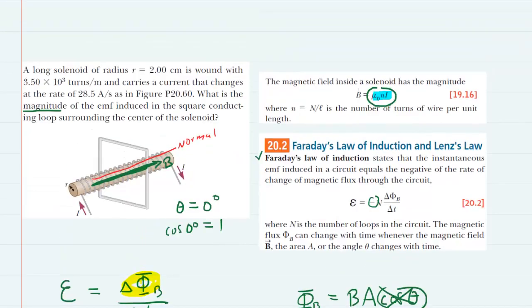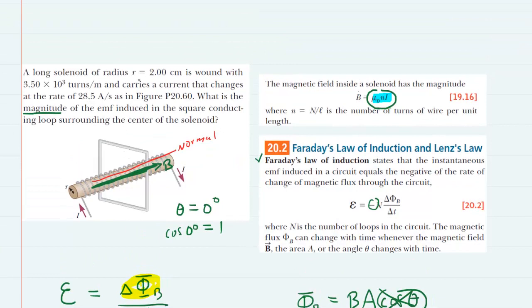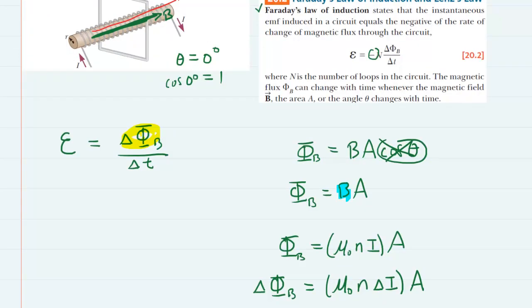Now how do we know the current is changing? Well the question notes that right here the current is changing at a particular rate, 28 and a half amps per second. So we can definitely, when writing the change in magnetic flux, indicate that it is the current that's changing, not the area or not any of the other values.